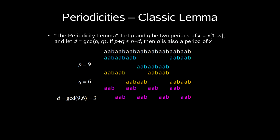One of the classic lemmas concerning properties of strings is called the periodicity lemma. Let p and q be two periods of x equal to x1 up to n, and let d be the greatest common divisor of p and q. If p plus q is less than or equal to n plus d, then d is also a period of x. An example can be seen below for the string x, which is the following occurrence of aab. We see that for the period p equals 9 and q equals 6, d can be calculated to be 3, giving us a period of x.